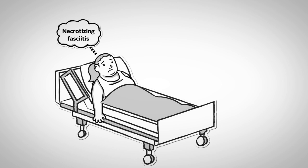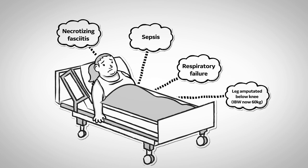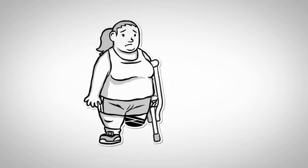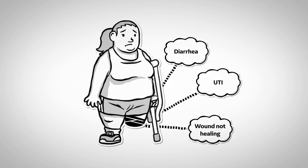She developed sepsis and acute respiratory failure. Her first day in the hospital, she had a below-the-knee amputation, which adjusted her ideal body weight to 60 kilograms. She developed postoperative complications from the amputation that included diarrhea, a urinary tract infection, and poor wound healing. She certainly has a lot of healing to do.